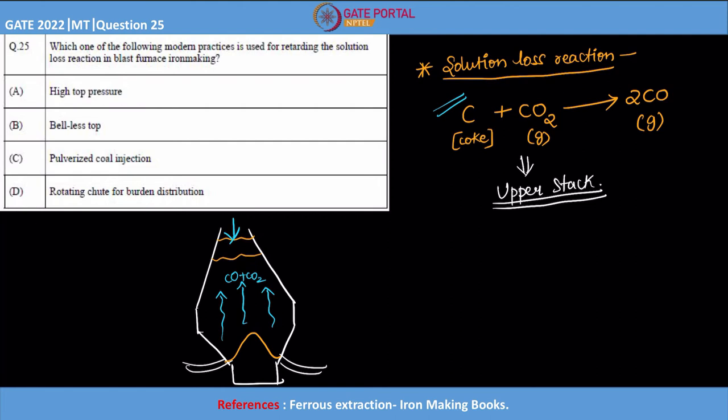So that is why it is called as a solution loss. This solution loss is actually incurring more costs to you in terms of coke. You need to add more and more coke because coke is getting converted into CO and it is easily escaping out without involving in the reduction of iron ore. That is what is called as solution loss, basically coke loss, in simple terms.